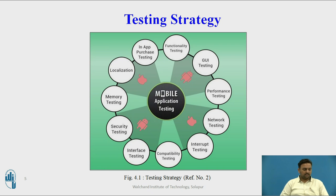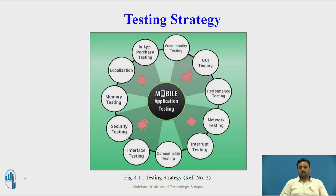Now we are exploring the testing strategy. In that diagram, you can see the number of testing strategies given: functionality testing, GUI testing, performance, network, interrupt and compatibility, interface, security, memory testing, localization, and in-app purchase testing. These mobile applications go through these tests during the testing procedure, and if it passes all criteria, it is considered a perfect mobile application to be delivered to the market.